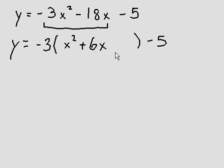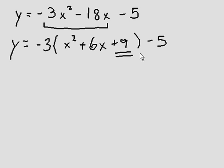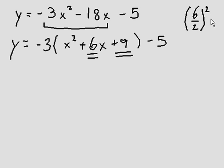Now we need a number here that will complete the square for this trinomial. What will that number be? 9. Why is it 9? It's easy to find out. We always get the middle term, take it, divide it by 2 and square it. 6 divided by 2 is 3. 3 squared is 9.